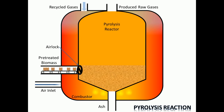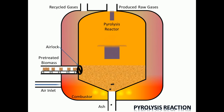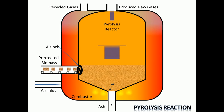The second step is the pyrolysis reaction. The pre-heated biomass is introduced into the pyrolysis reactor, which contains an airlock to keep oxygen and unwanted air out of the reactor. The combustor preheats the pyrolysis reactor and heats the biomass indirectly. In general, pyrolysis of organic substances produces gas and sometimes liquid products, and leaves a solid residue richer in carbon content — char.